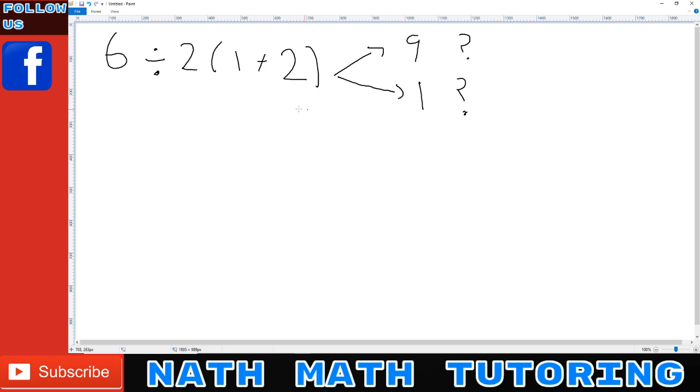A lot of people are stumped on this problem. 6 divided by 2 brackets 1 plus 2, close bracket. And there are two popular answers going around, 9 or 1. What's the correct answer?